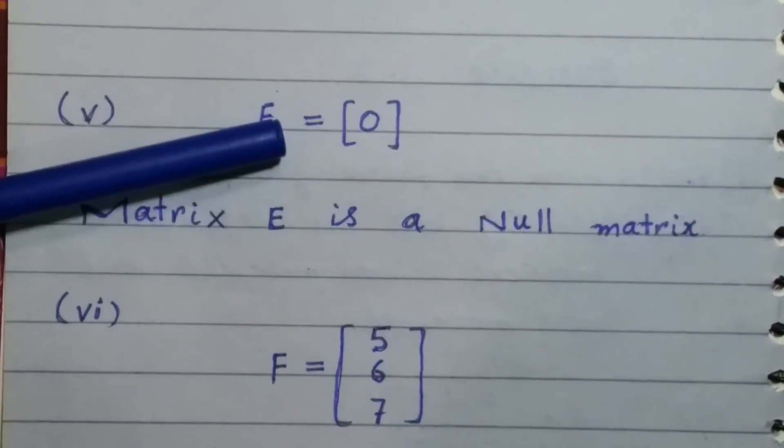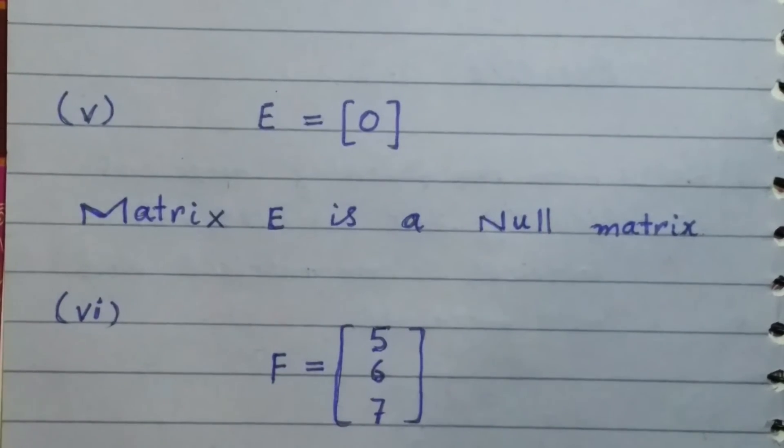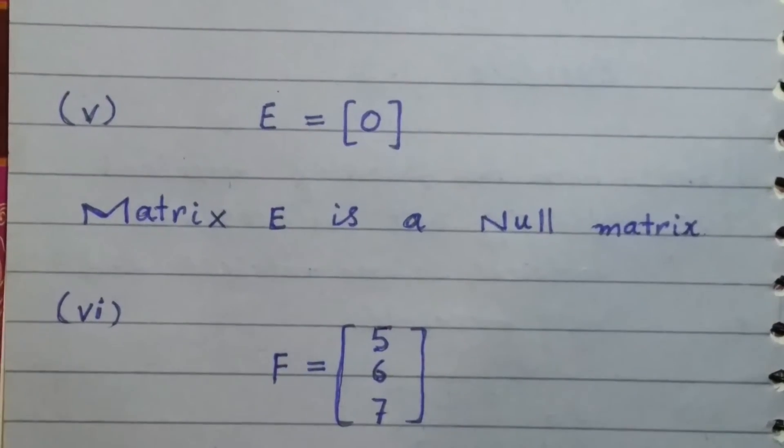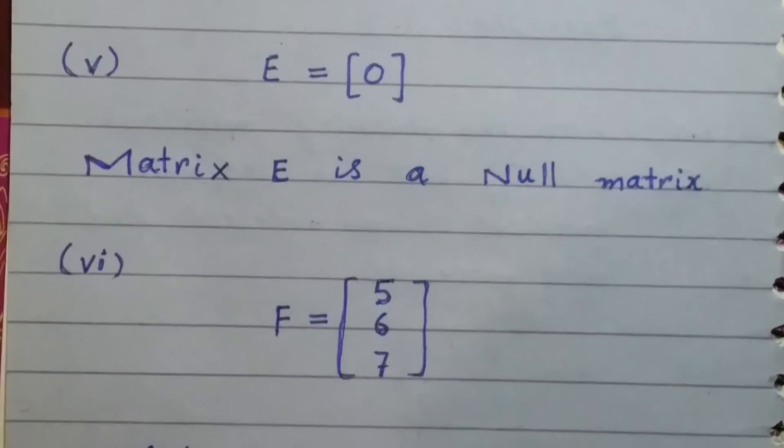Again, matrix E is a null matrix because its entries are zero. It has only one entry which is zero, so it is a null matrix. Matrix E is a null matrix.